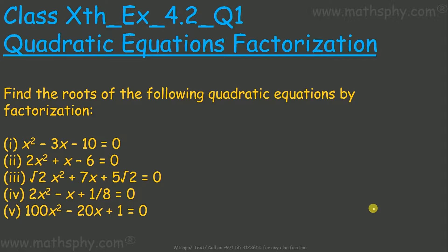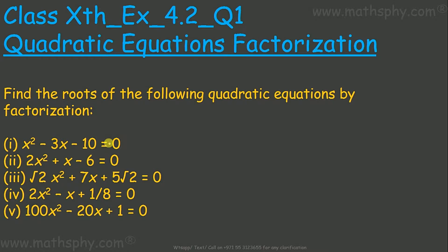This question says: find the roots of the following quadratic equations by factorization. Roots means we have to find out zeros — those values of x which make the quadratic equation equal to zero. We say roots or zeros; both are the same thing. We have five equations and we'll try to find their roots or zeros.